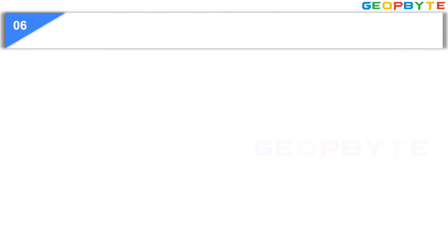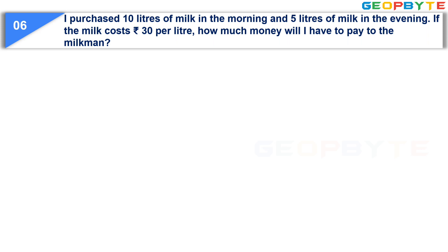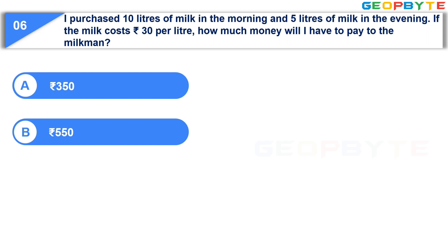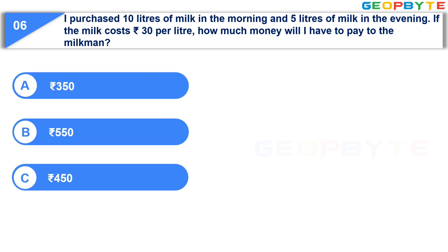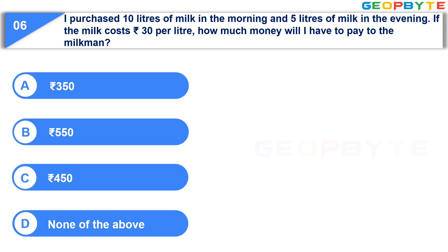The next question is: I purchased 10 liters of milk in the morning and 5 liters of milk in the evening. If the milk costs rupees 30 per liter, how much money will I have to pay to the milkman? Option A: Rs. 350. Option B: Rs. 550. Option C: Rs. 450. Option D: None of the above. Your time starts now. Your time is up and the correct answer is Option C: Rs. 450.